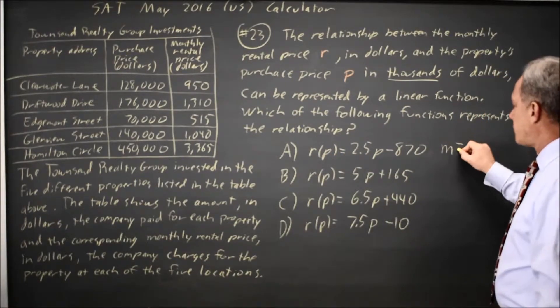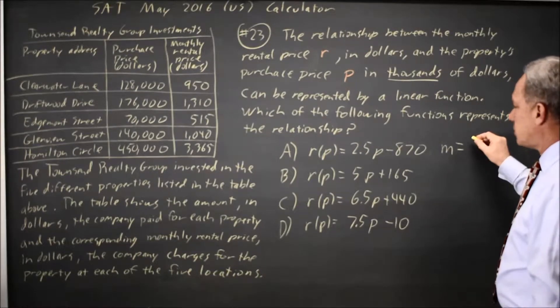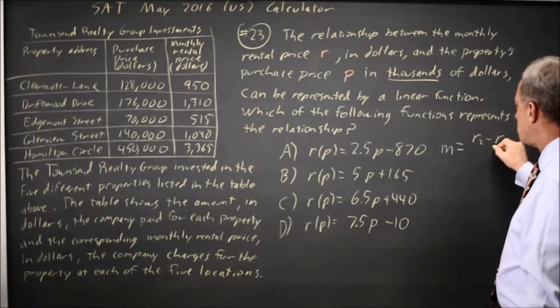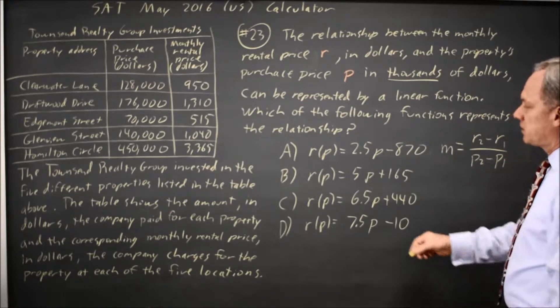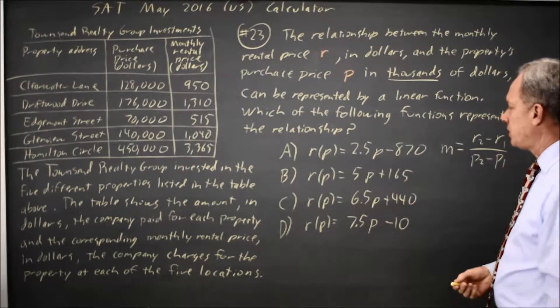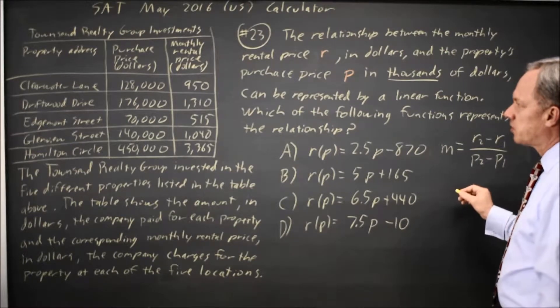One way to find this is to find the slope. The slope is R2 minus R1 over P2 minus P1, and since the slopes are different among the equations, the slope will tell us which one is correct.